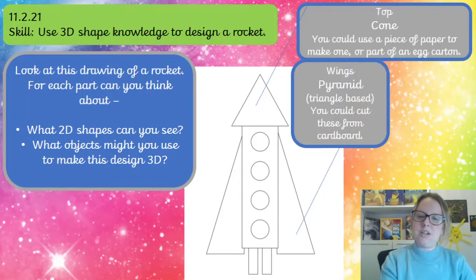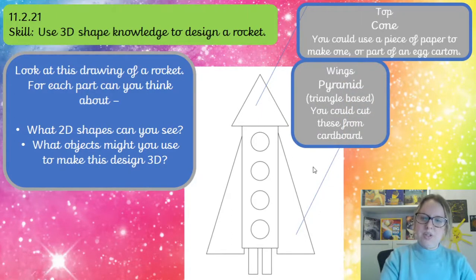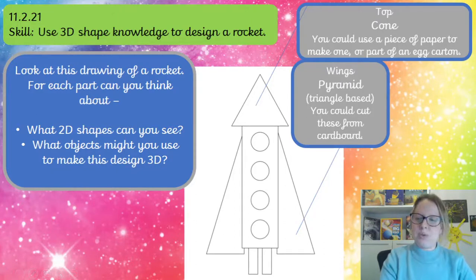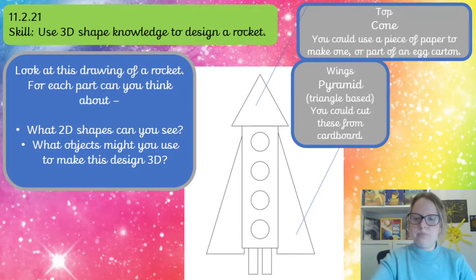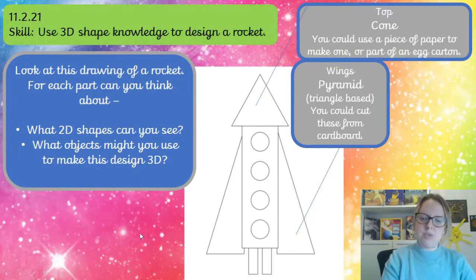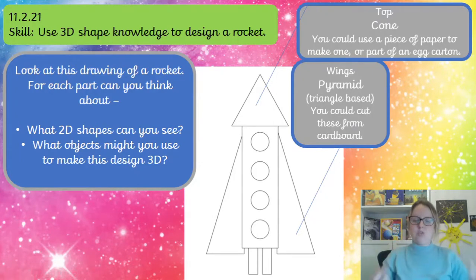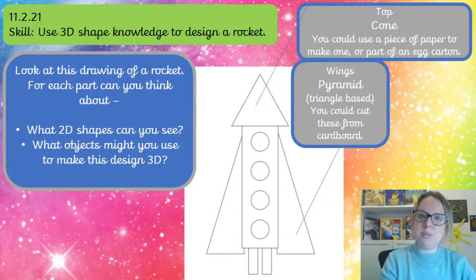So let's look at the wings. We could use pyramid shapes for that, couldn't we? Or more cones. And you could use these from cardboard — you could cut them out of cardboard. Or you could just use triangle shapes. You could use 2D shapes. You could use a mixture of 2D and 3D. It's up to you.